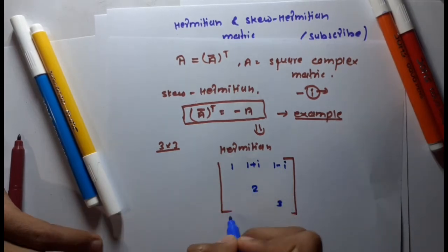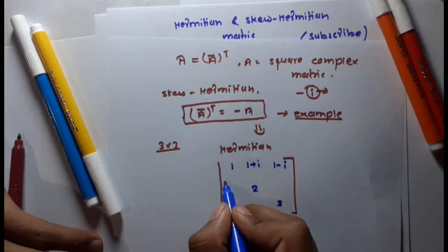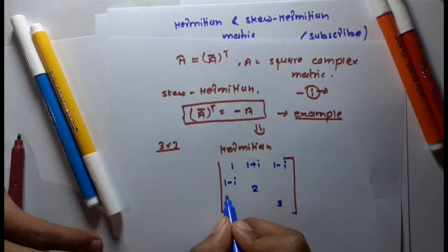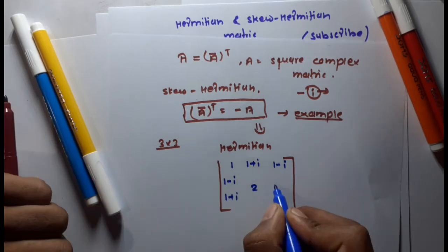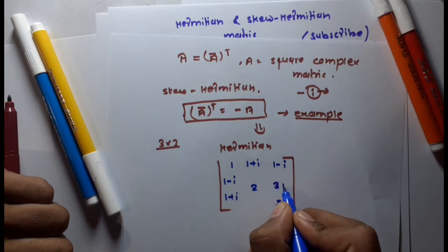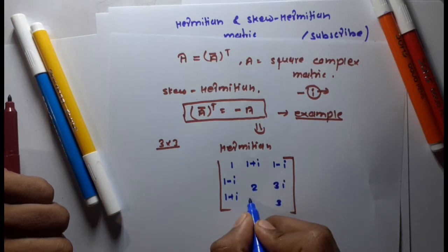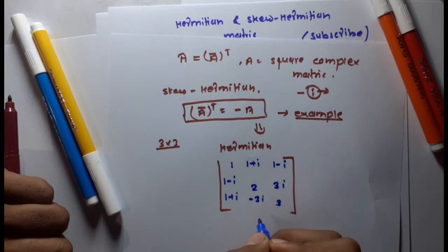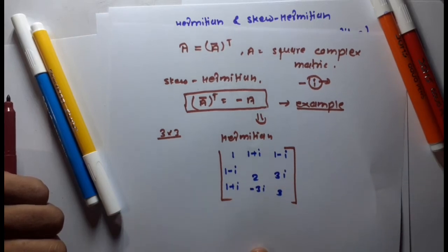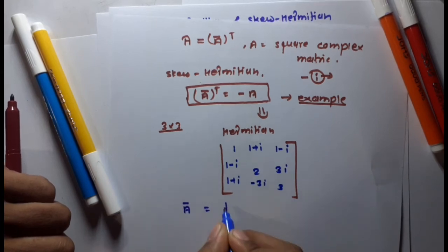In column one, write the conjugates of row one — so one minus i and one plus i. Then in another off-diagonal position, write a complex number such as 3i, and write its conjugate, minus 3i, in the corresponding symmetric position.